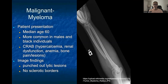For myeloma, the median patient age is usually 60. Malignant myeloma is more common in males and Black individuals. When thinking about signs and symptoms, remember the CRAB mnemonic: hypercalcemia, renal dysfunction, anemia, and bone pain and lesions. Image findings usually consist of punched-out or lytic lesions with no sclerotic borders — a very bland-looking lesion with no specific borders, just very lytic. Treatment varies by individual and may include chemotherapeutics, and for large lesions with pathologic fractures, surgical intervention may be necessary.